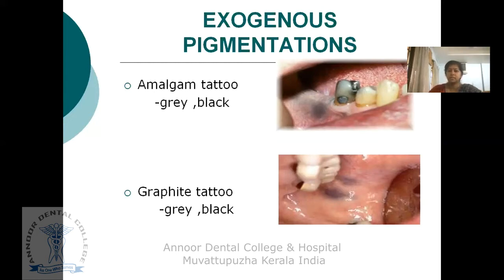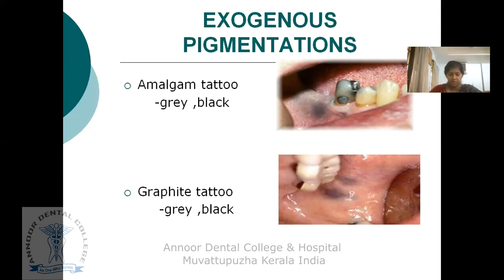Another type of exogenous pigmentation is graphite tattoo, which resembles amalgam tattoo and occurs due to the implantation of a lead pencil. The lesions are also macular and gray or black in color.